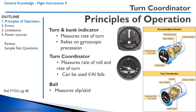Likewise, if we were to do a skid on a bicycle, we would fall to the outside of the turn. On a bicycle, we pretty much always stay coordinated — otherwise we would fall over. But an airplane can be uncoordinated.